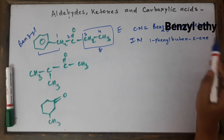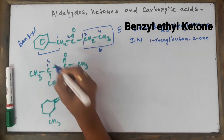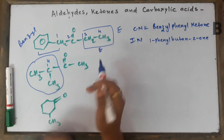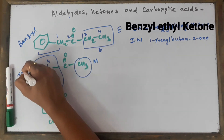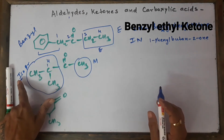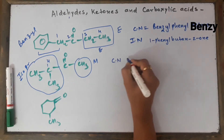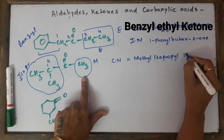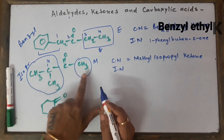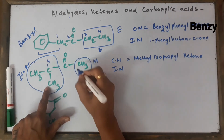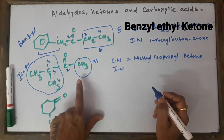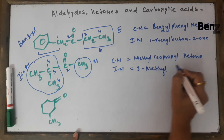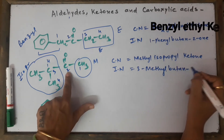Now this compound has an isopropyl group on the left side and a methyl group on the right side. For the common name, we don't look at the 'i' in isopropyl — we look at the 'P'. So alphabetically M comes before P, and the common name is methyl isopropyl ketone. For the IUPAC name, select the longest chain: 1, 2, 3, 4. There is a methyl branch at position 3 and the ketone at position 2. The IUPAC name is 3-methylbutan-2-one.